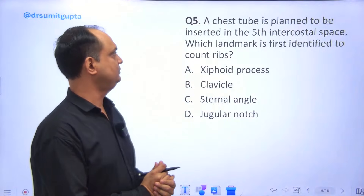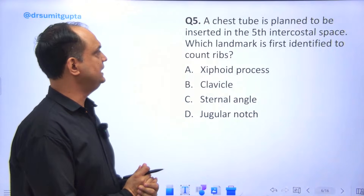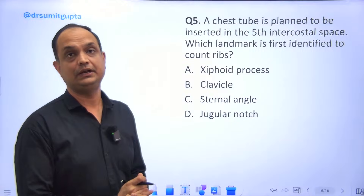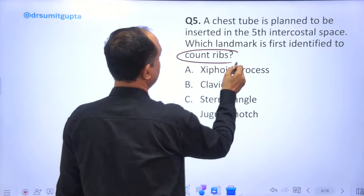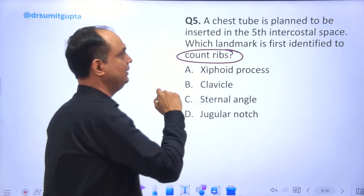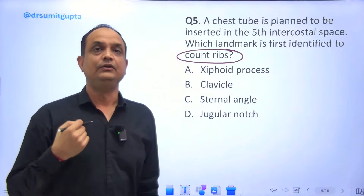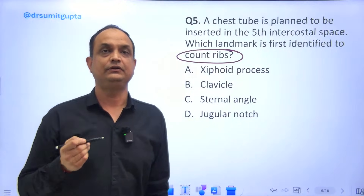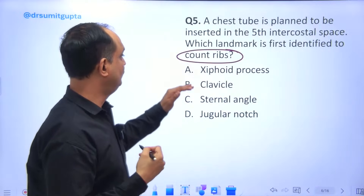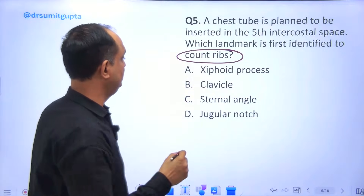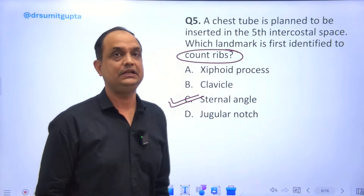A chest tube is planned to insert in the fifth intercostal space — which landmark is first identified to count the ribs? Rib counting always starts with the sternal angle, where you have the attachment of the second costal cartilage. So you start from the sternal angle, which is the clinical importance of this area.